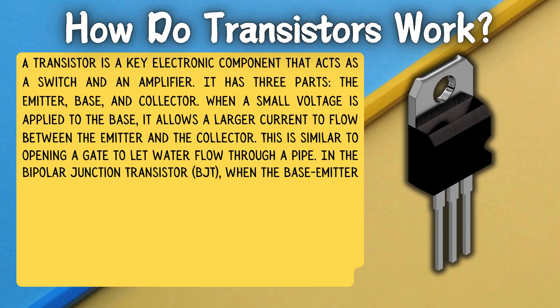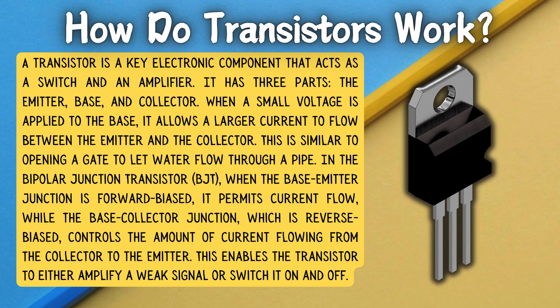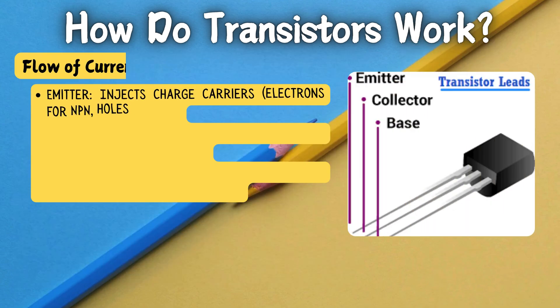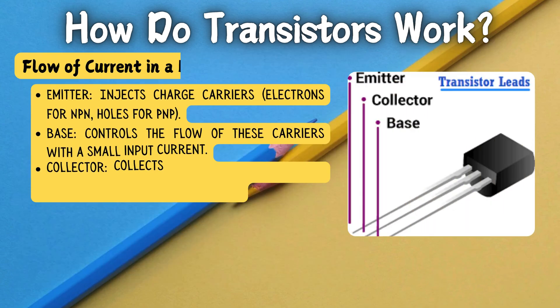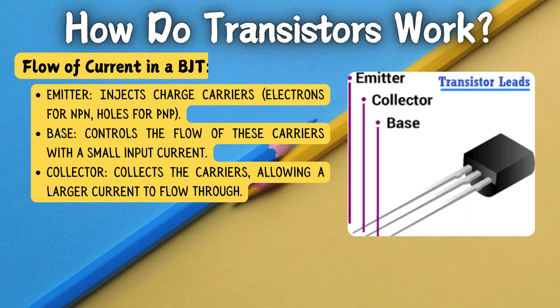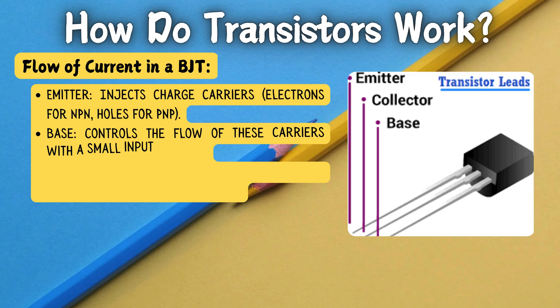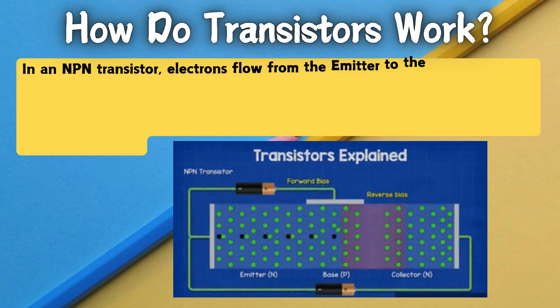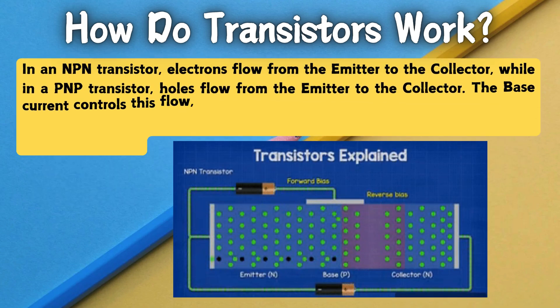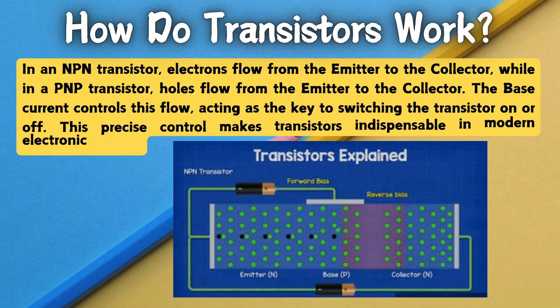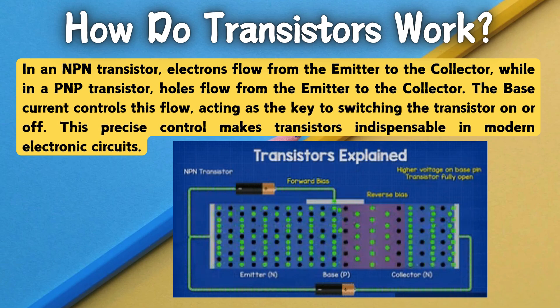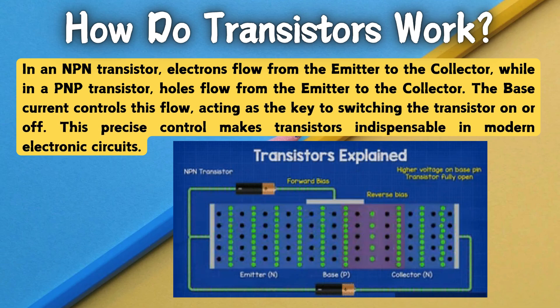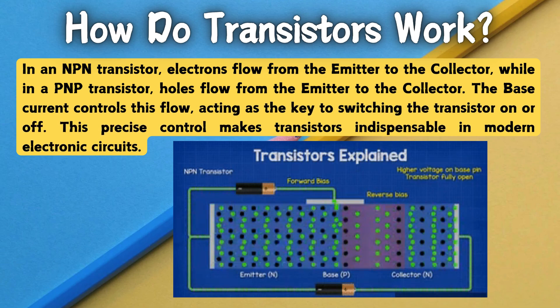A transistor is crucial in electronics, acting as both a switch and amplifier. It has three parts: emitter, base, and collector. A small voltage to the base controls a larger current between the emitter and collector — this gate opens or closes based on the base voltage, allowing or stopping current flow. Transistors also amplify weak signals, boosting them from a small input to a stronger output. Their ability to switch and amplify is vital in many electronic devices.